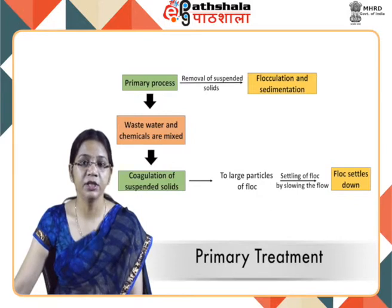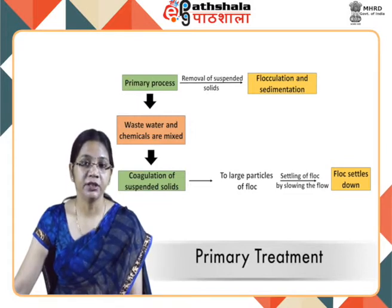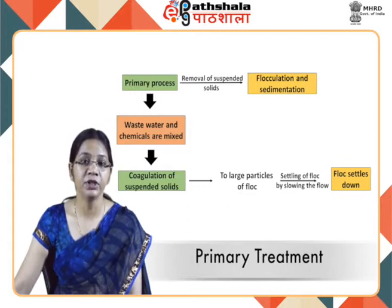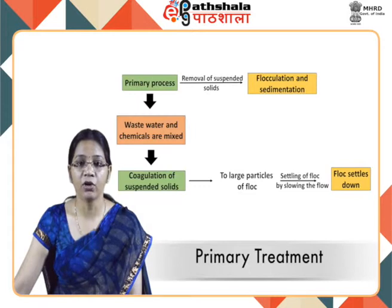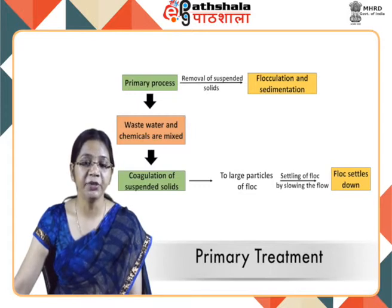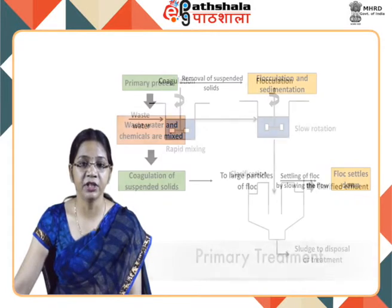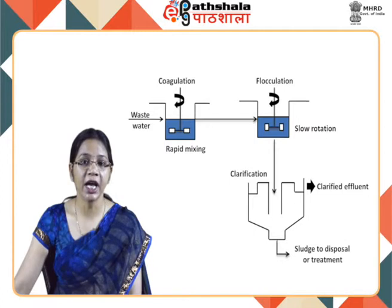The primary treatment involves removal of all suspended solids by flocculation and sedimentation. In this treatment, wastewater and chemicals are mixed, causing coagulation of suspended solids into larger particles called floc. After that, settling of the floc takes place by slowing the water flow, causing gravity to dominate and settle the floc. The figure shown here represents the various processes used for the primary treatment of wastewater. Coagulation and flocculation are interdependent processes.